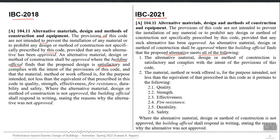The first condition is that whatever alternate material, design, or method of construction is used is satisfactory and complies with the intent of the provisions of this code — if it follows the intention of the code it should be approved. Secondly, the material, method, or work offered is for the purpose intended and not less than the equivalent of that prescribed in this code. Whatever minimum requirements or standards are set by this code, if the alternate also fulfills those, it can be approved by the authority.